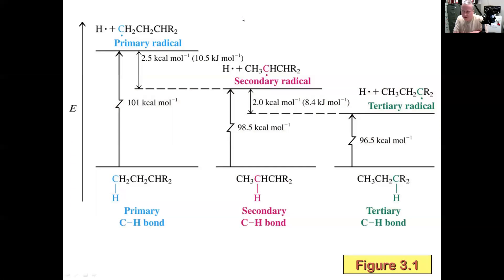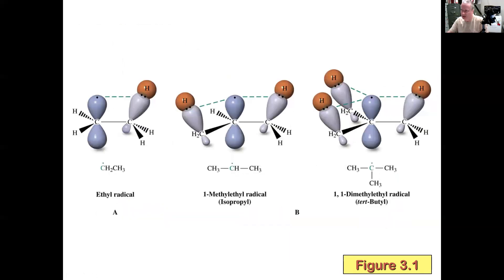We showed this—how basically we're talking about radical stability, right? The main takeaway was that tertiary radicals are nice and stable. Then secondary are a little less stable and primary are less stable. We discussed that in depth previously. This was the figure that explained that it was hyperconjugation.